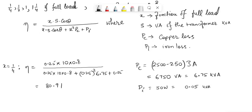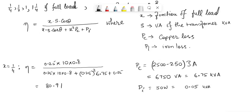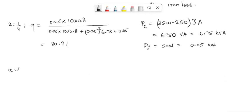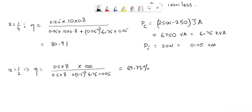When x is equal to half, the same calculation can be repeated. So x equals half implies η equals 0.5 into 8 divided by 0.5 into 8 plus 0.5 squared into 6.75 plus 0.05, which is equal to 69.72%. There is a percent multiplication with 100 also, because we are reporting the efficiency value in percentage.